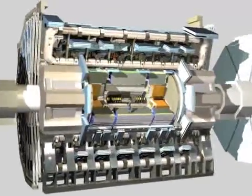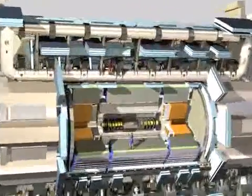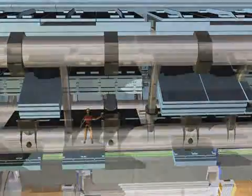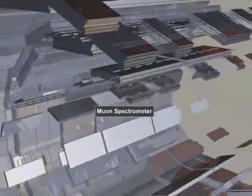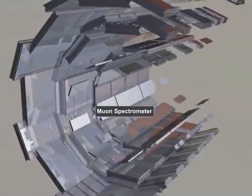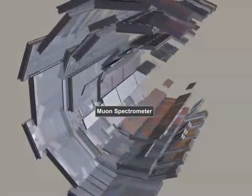Particles known as muons can penetrate through the calorimeters and reach the outermost part of Atlas, known as the muon spectrometer. The muon chambers in Atlas cover a surface of several football fields.